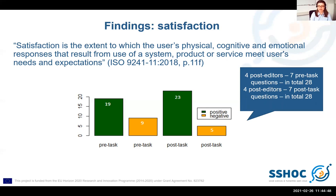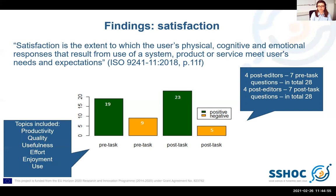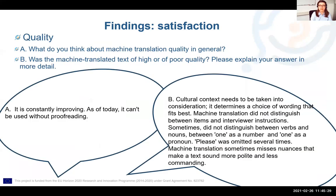We received 28 answers from the pre- and post-task questionnaires in total. Topics included productivity, quality, usefulness, effort, enjoyment and use. As shown by the evaluation of the pre-task questionnaires, the overall satisfaction of participants was rather high prior to the post-editing task. The post-task questionnaires showed a change in attitude towards machine translation with regards to the effort needed for correction and expected enjoyment of the post-editing task. The overall satisfaction increased. However, the rather negative responses about expected quality stayed rather negative after the task.